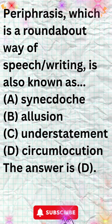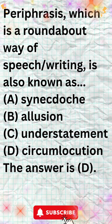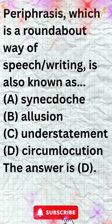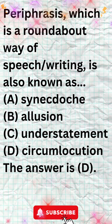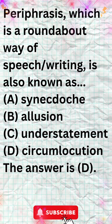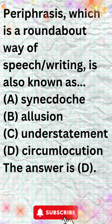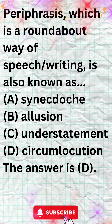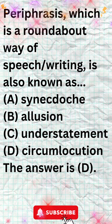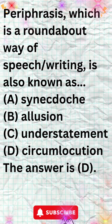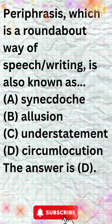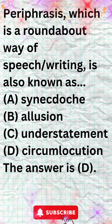Periphrasis is also known as circumlocution. A synecdoche is a figure of speech in which a part of something is used to represent the whole. For example, sails can be used to represent a ship.